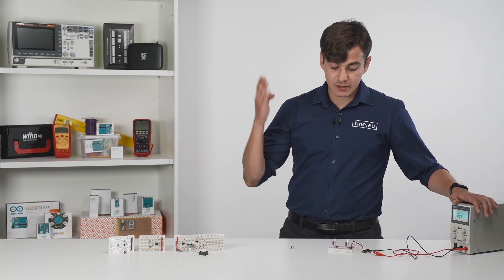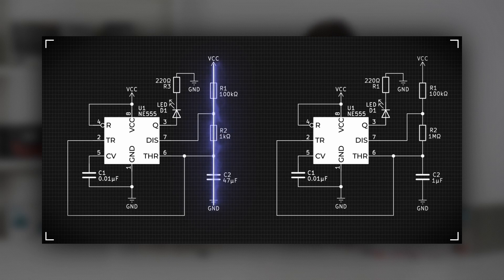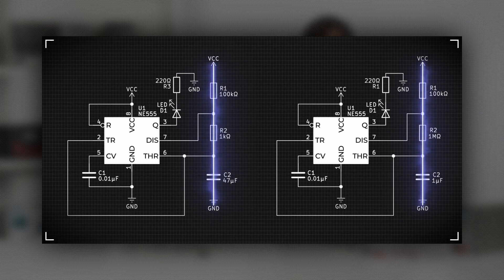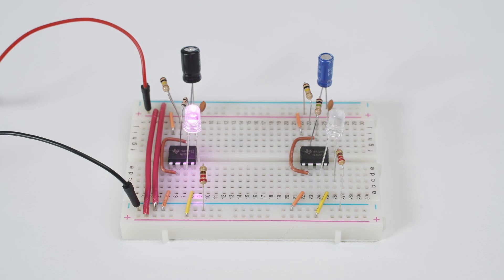The first circuit uses 47uF capacitor, 100kOhm R1 resistor and 1kOhm R2 resistor. The second one uses 1uF capacitor, 100kOhm R1 resistor and 1MOhm R2 resistor. And because of this, you can see that they are flashing in different frequencies.